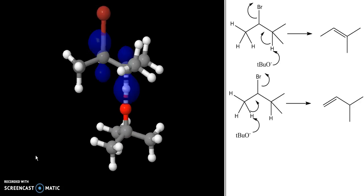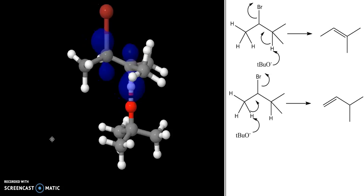Now if we look at the transition state, it looks something like this. You can see that the bond between the hydrogen and the carbon is starting to break, and the bond between the hydrogen and the oxygen is starting to form. If we wanted to, we could show these methyl groups starting to become planar. As this bond starts to break, the p orbital that's going to form my alkene starts to form. These two p orbitals will eventually form my pi bond.